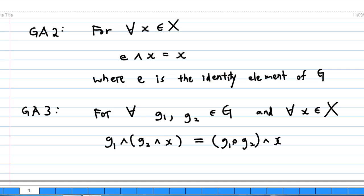GA2: We know G always has an identity element. GA2 states that e cap x is always equal to x.